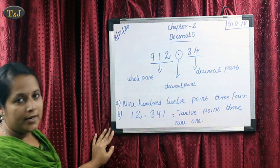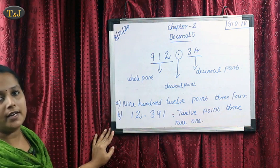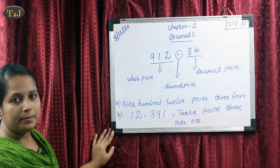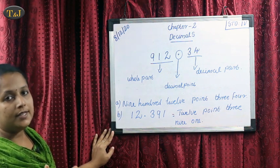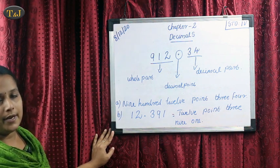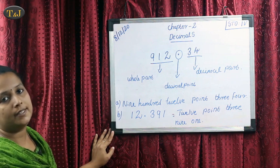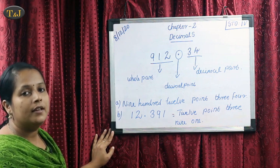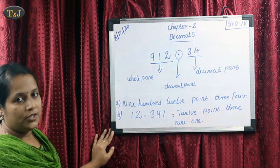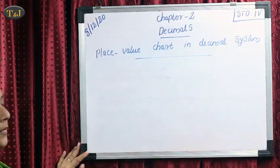All of you understood how we can read the decimal number. Before the decimal, we read the number as a whole part. Then after the decimal, we read the number as single digits.